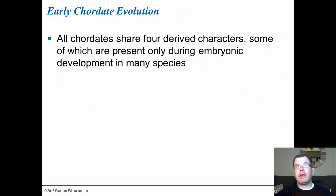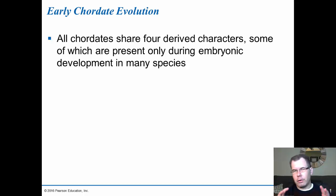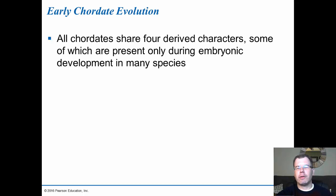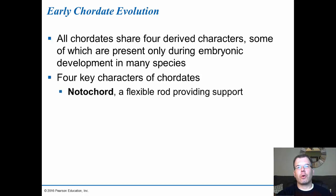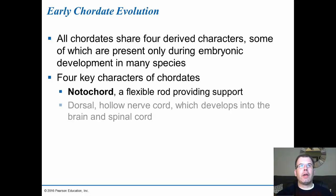All chordates have these features somewhere in their lifetime. In upper vertebrates, many only appear in the embryonic stage. The first characteristic is the notochord — a flexible rod providing support. In most vertebrates, you see this during development, and then the notochord forms the vertebrae protecting the spinal cord. The second is the dorsal hollow nerve cord, which develops into the brain and spinal cord.